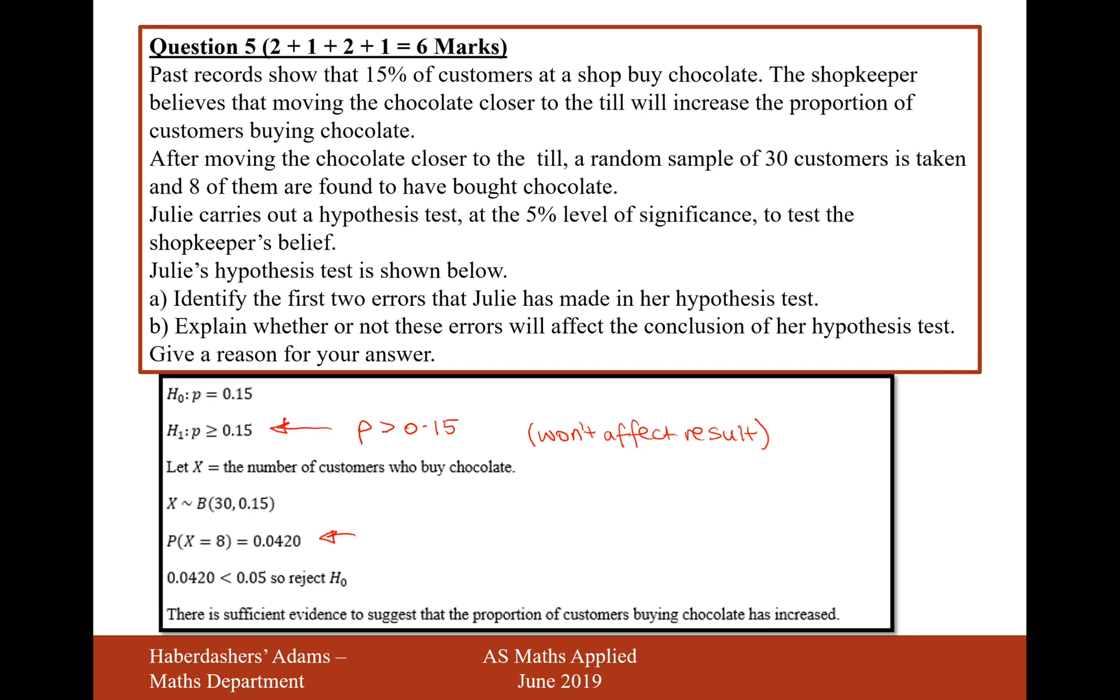So just refer to this as line 2. And then there must be another mistake because it says two errors. Now it's definitely on this bit here because if Julie's thinking that the amount of customers will increase, then what she should be using here is the probability of 8 or more customers picking up a bar of chocolate. Because if she thinks that the hypothesis of moving the chocolate closer to the hill has worked, then if she sees 8 people or 9 people or 10 people or 11 people, then she'll also think that her hypothesis has worked. So this will affect the result.